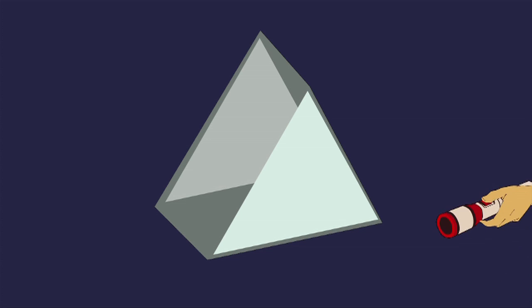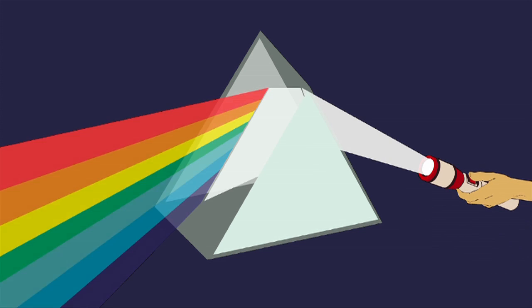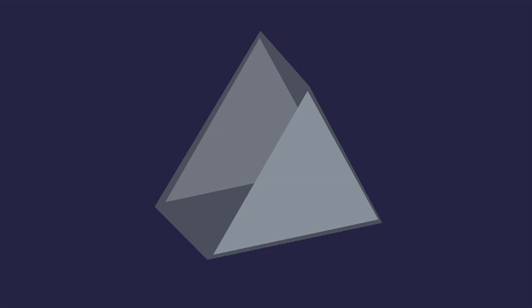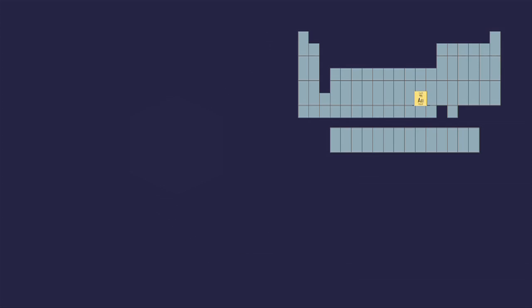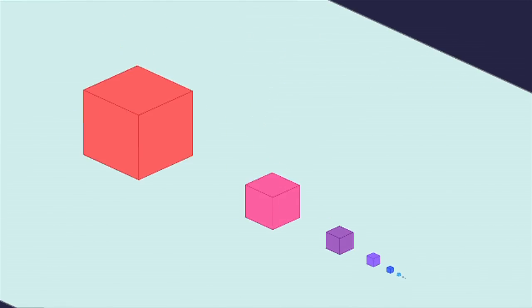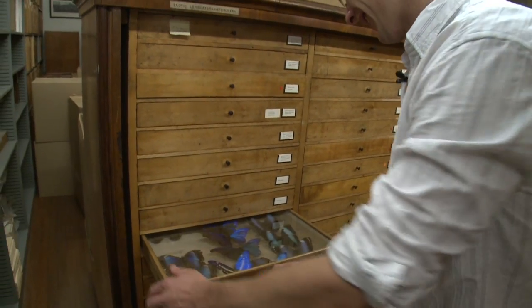Light also behaves differently as you head down to the nanoscale. White light contains all colours. When particles get really small, they start to bounce only certain colours back, so you see them as those colours. As gold gets smaller, it stops looking gold and instead reflects red, purple, blue, and finally becomes invisible when it's too small to reflect any colours of light that you can see. These strange properties of light can be very useful.